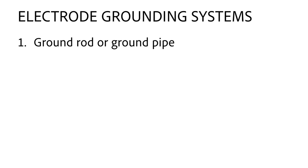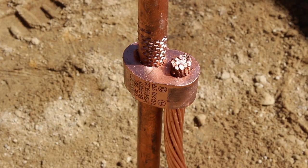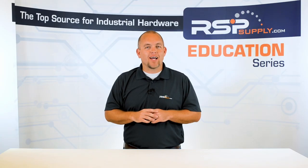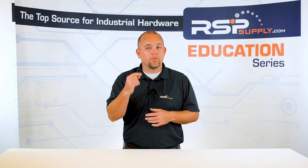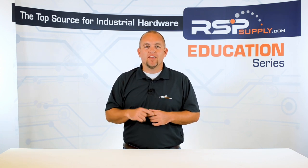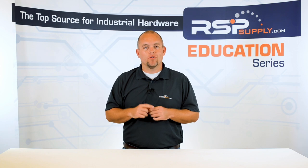First, and probably the most common electrode grounding system, is the ground rod or ground pipe. This rod is to be no less than eight feet in length and should come in direct contact with the soil. The more conductive the rod or pipe is, the better your grounding system will perform. There are many different types of grounding rods and installation methods because of the effectiveness and popularity of this grounding electrode system.